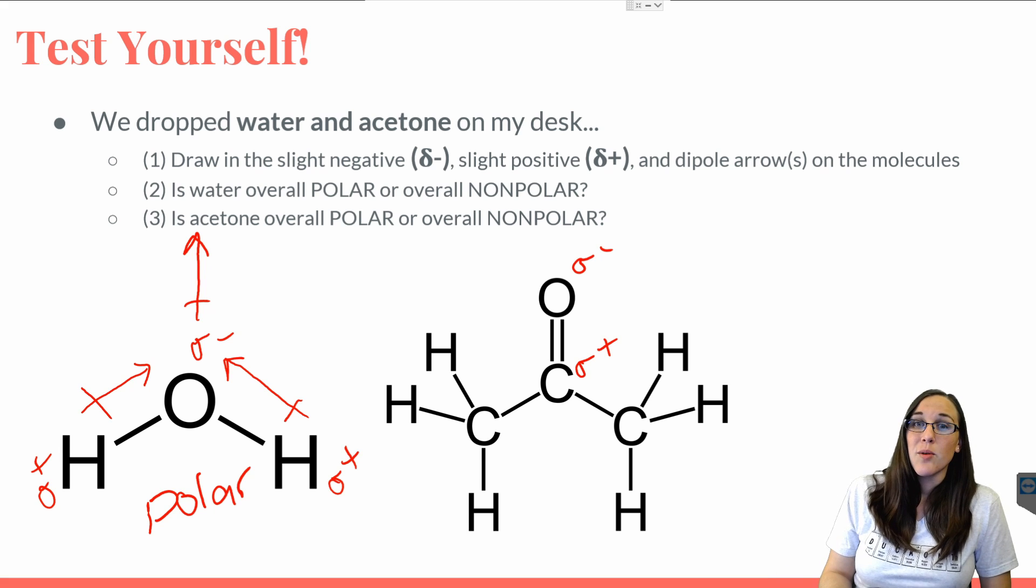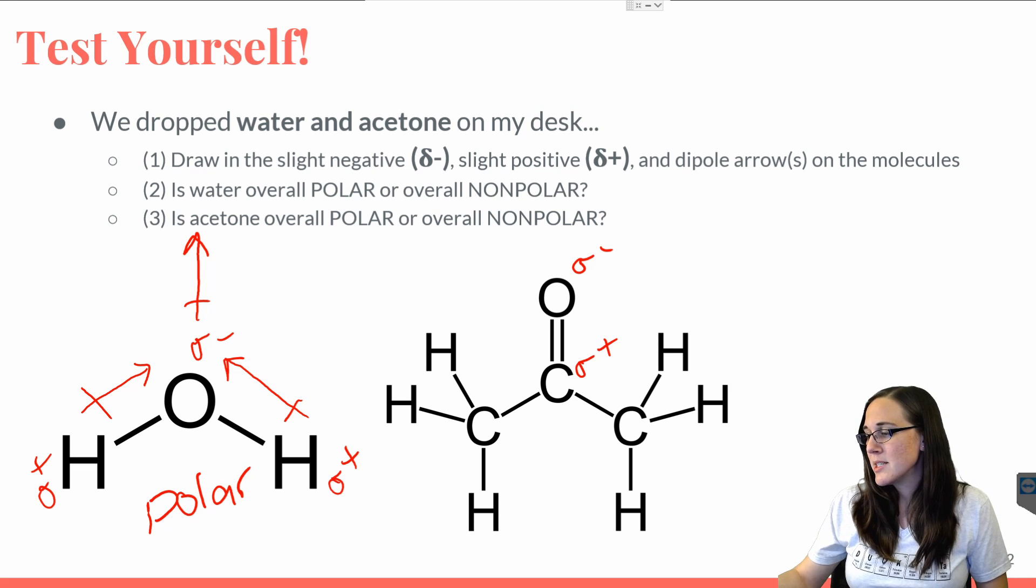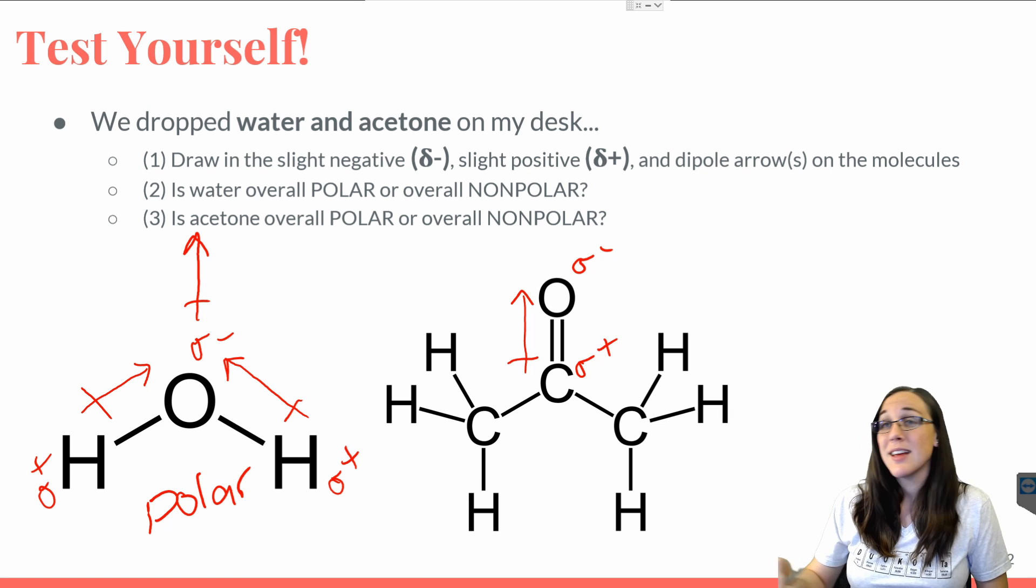We're going to draw an arrow pointing towards the direction of where the electrons want to be, and that happens to be towards oxygen. Put a plus on the butt for carbon.